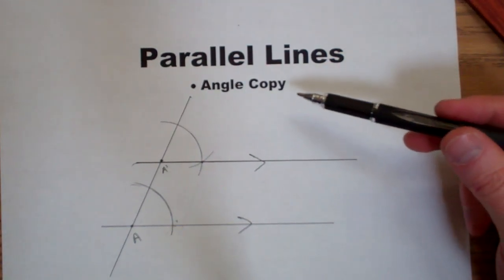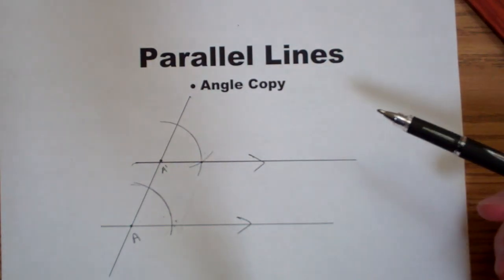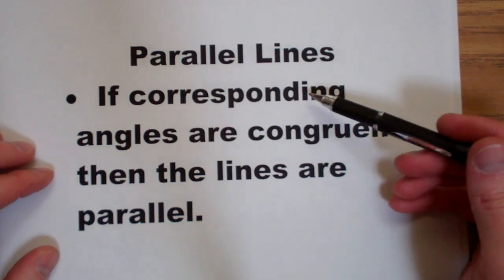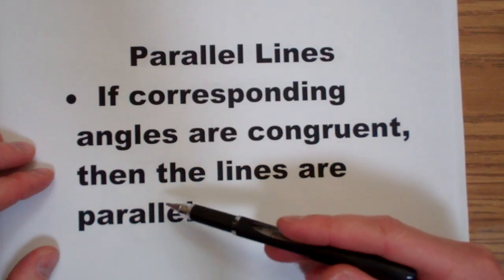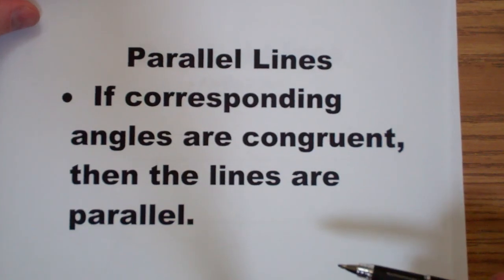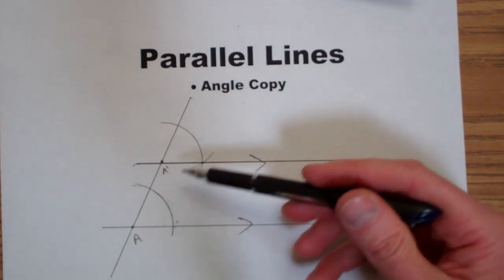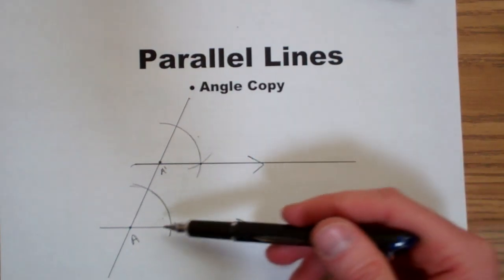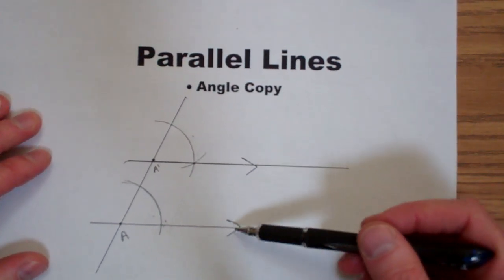This construction used the angle copy construction and the conjecture that states if corresponding angles are congruent, then the lines are parallel. These are corresponding angles, and they're congruent, therefore the lines are parallel.